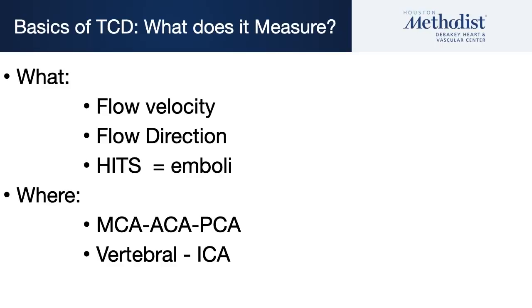So let's talk a little bit about the basics of transcranial Doppler and what does it measure. It measures flow velocity in certain vessels. It measures the direction of flow in those vessels. It detects high intensity transient signals which are emboli, though it can't reliably distinguish between air and particulate emboli. Which vessels? It can look at the anterior circulation — the middle cerebral artery, anterior communicating artery, and the posterior communicating arteries. It can also look at the vertebrals and the internal carotid arteries at their termination.